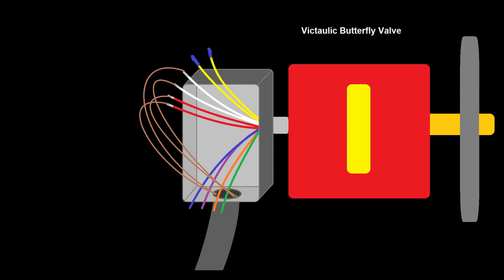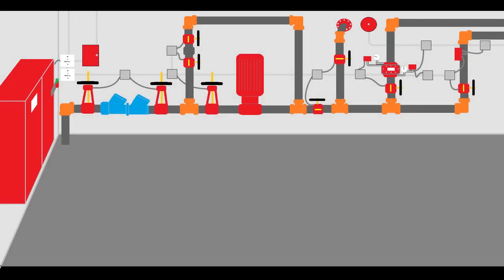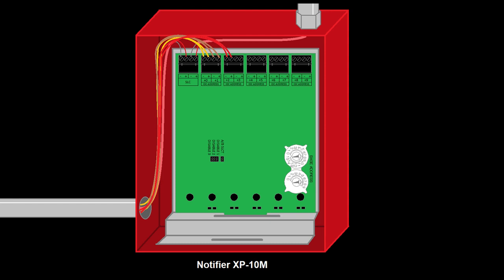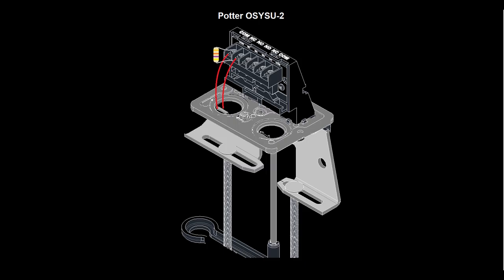Now that we've seen how to wire up both types of valve tampers, we can continue on with the rest of the valves in the room. The next valve we have to wire in is the OS&Y pump suction valve. We'll use the next available point on the XP10 and wire it to common and normally open terminals on the tamper switch, same as before. The resistor will go right across the wires since this is the only device being monitored by this point.